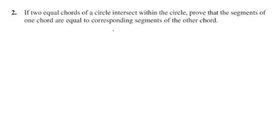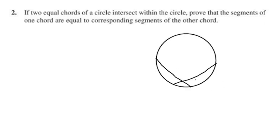If two equal chords of a circle intersect within the circle. I will make a circle here. This chord is called MN, this chord is called AB, and their intersection point is called P. The segment of one chord equals the corresponding segment of the other chord — this segment is called MP.